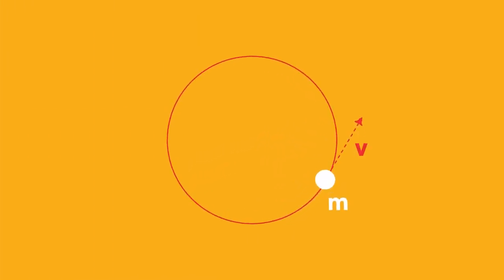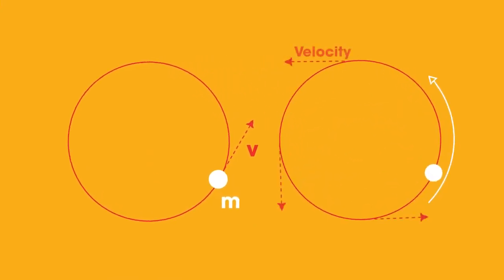When an object is moving in a circle at a constant speed, it has a certain velocity, v, which is at a tangent to the circle.